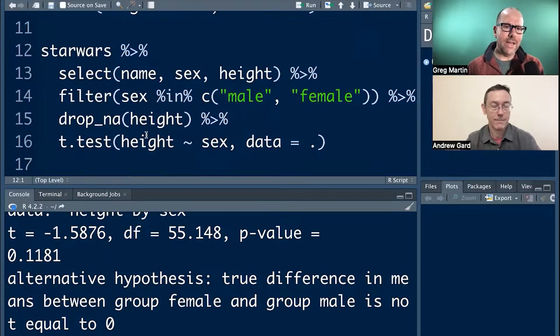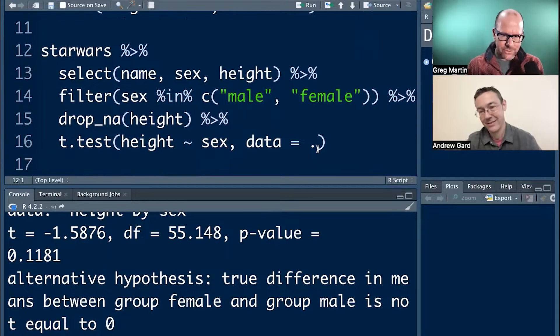Here we go. And voila, we've got the exact same code, select, filter, drop, pipe it into the t-test, height disaggregated by sex, dot equals, boom, dot. The dot tells R or tells the tidyverse packages, especially when you're doing the piping, that it wants to see the data over here. And it solves the whole problem and you can use it for any function that you want to put into your pipes where the data isn't expected to be the first argument.